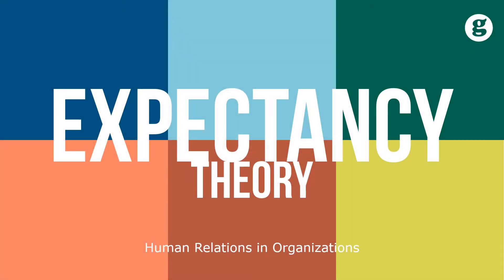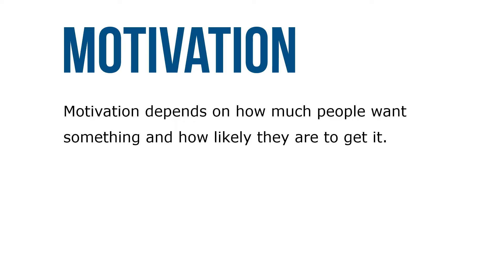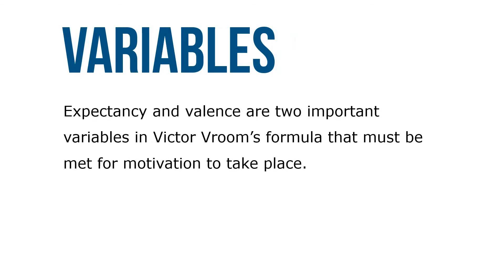Let's take a look at expectancy theory. The expectancy theory, which is Vroom's formula, states that motivation equals expectancy times valence. Motivation depends on how much people want something and how likely they are to get it. Expectancy and valence are two important variables in Vroom's formula that must be met for motivation to take place.